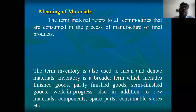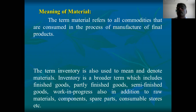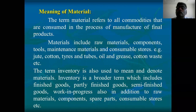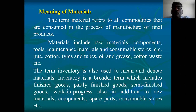What is the meaning of material? The term material refers to all commodities that are consumed in the process of manufacture of a final product. Whatever commodities you consume to manufacture a final product are all called material. The material includes raw material, components, tools, maintenance material, and consumable stores — all these are called material.